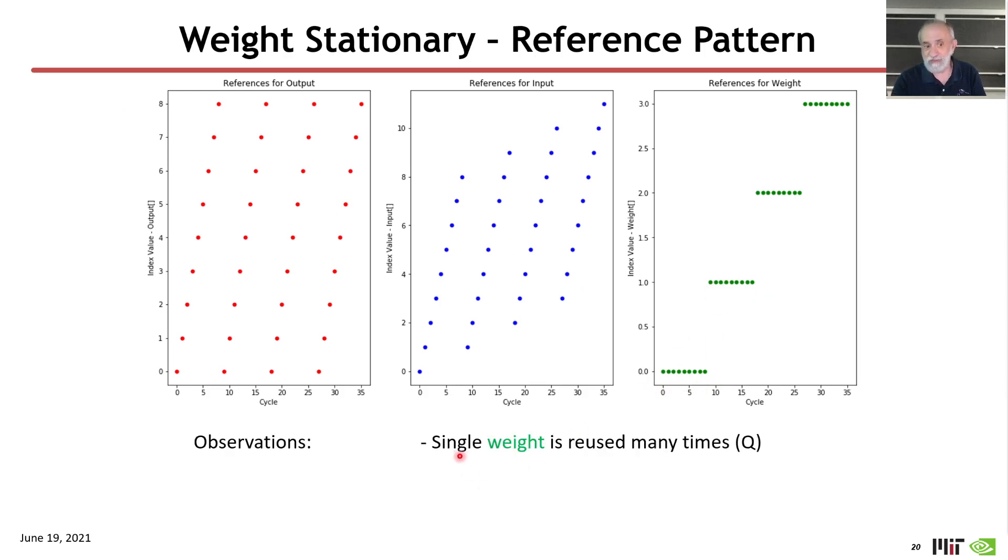And so, the observations are that a single weight is reused many times, in fact, Q times. Then, we have a large sliding window of inputs. We step sequentially through the inputs, but we start offset, and we don't go to the end each time. And so, that was picking up the one element from the window in each time step. And then, finally, we have a fixed window of outputs, where we go from the beginning to the end of the outputs repeatedly, one sequence for each weight.